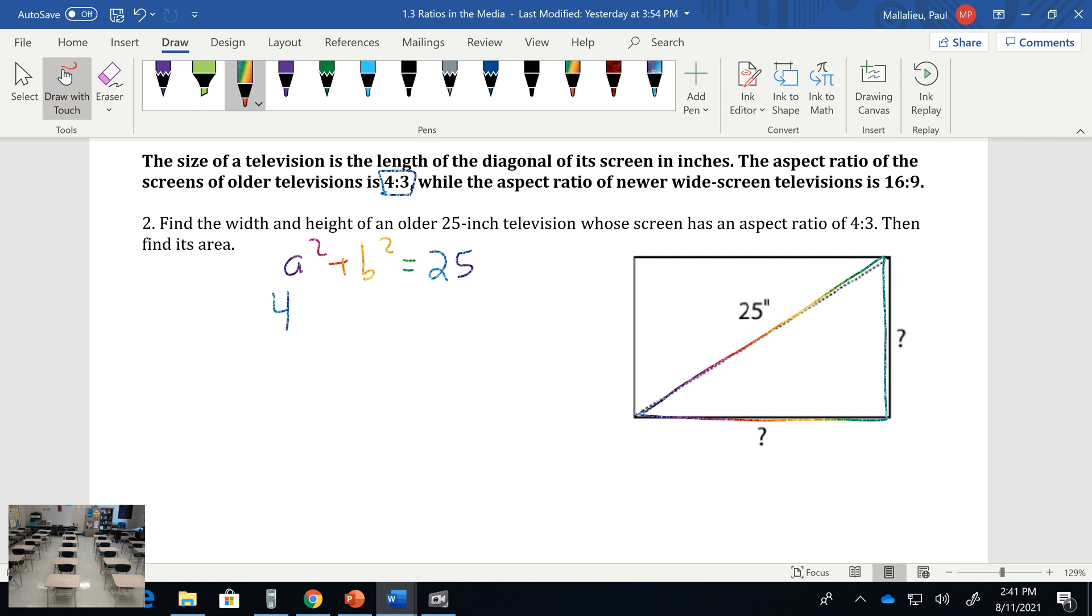We would say, well I know it's the aspect ratio of 4:3, so we would put this in as 4X because we don't know but we do know it's a 4 to 3 ratio. Then this one would in turn be 3X because we don't know, and we do know that it's 25 for our c².